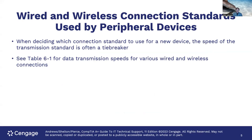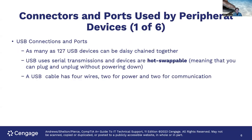Regarding wired and wireless connection standards used by peripheral devices, refer to table 6.1 for data transmission speeds for all the different types — you'll probably need to know that for the A+ exam. When deciding which connection standard to use for a new device, the speed of the transmission standard is often a tiebreaker.